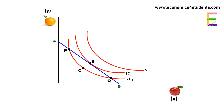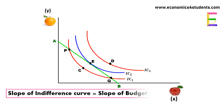Therefore, E is the optimal point of the consumer. The consumer cannot be in equilibrium at any other point. Of course, he can derive more satisfaction from point D, but this bundle is beyond his budget line and is not attainable. The consumer's optimal choice is depicted by point E, where his budget line AB is tangent to the highest attainable indifference curve IC2.